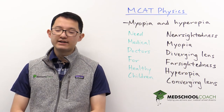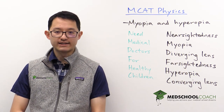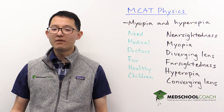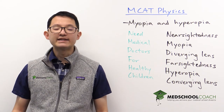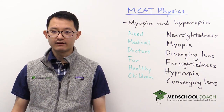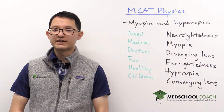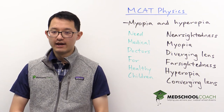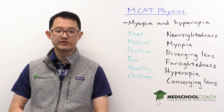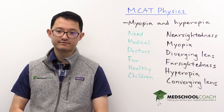Hyperopia is also called farsightedness. These individuals are the opposite — they can see far away very clearly but they can't see objects close to them. So these individuals need to wear a converging lens to correct their vision.